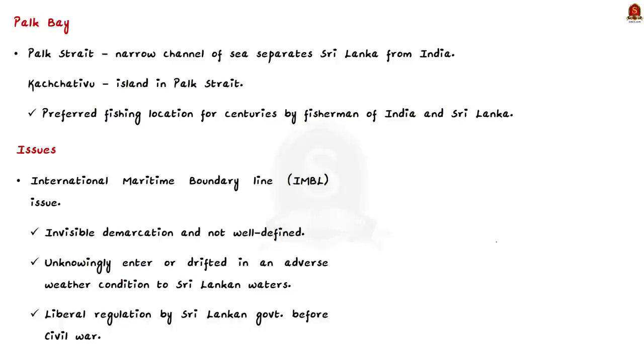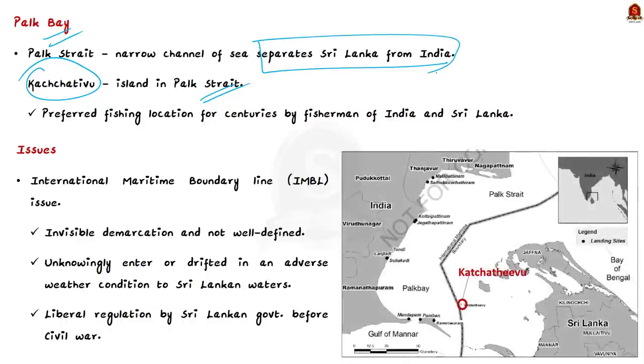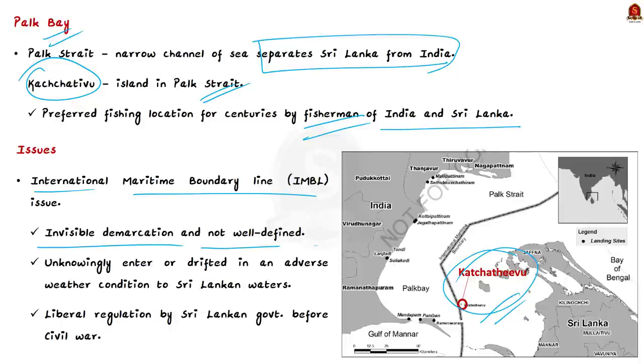The author mentions the fisherman issue as Park Bay issue because the concern is regarding the Park Strait and an island called Kacchathivu. Kacchathivu is a tiny rocky island in the Park Strait, which is a narrow channel of sea separating Sri Lanka from India. The island is about 12 km from the Indian coast and 18 km from the nearest Sri Lankan island. The strait is rich in marine resources, a preferred fishing location for fishermen of both countries for centuries.